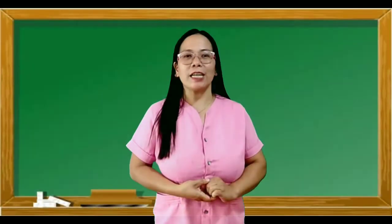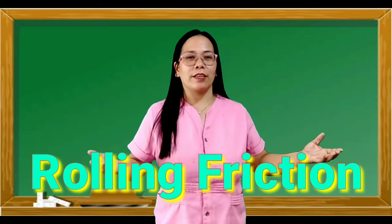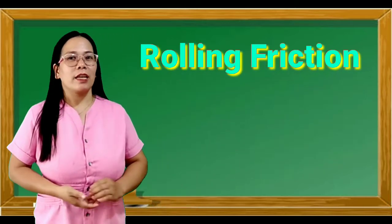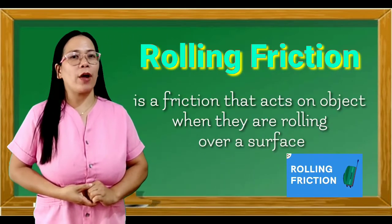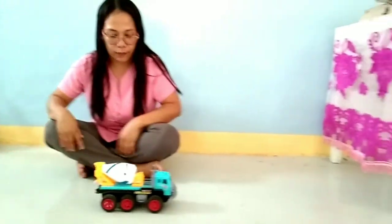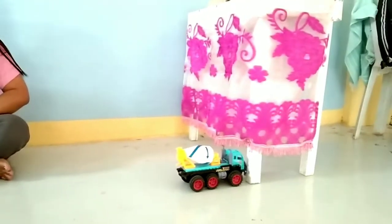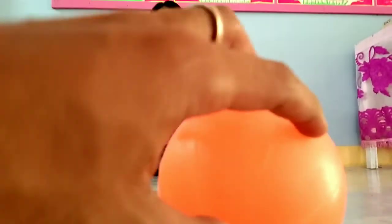The third type is rolling friction. Rolling friction is a friction that acts on objects when they are rolling over a surface. There is rolling friction between the tires and the floor. Another example is rolling friction occurring between the ball and the floor.